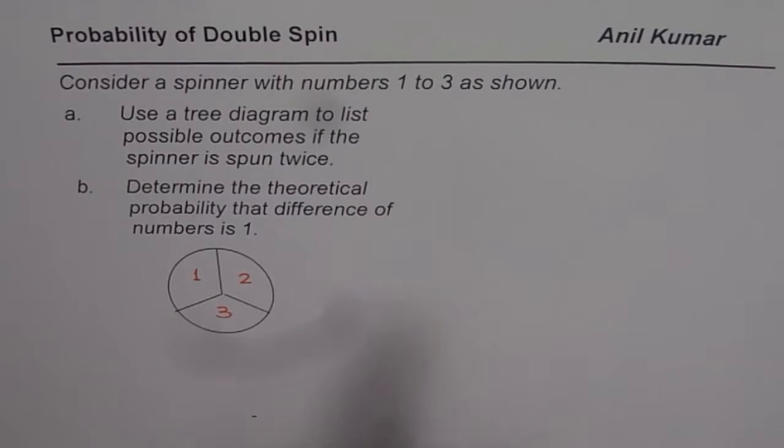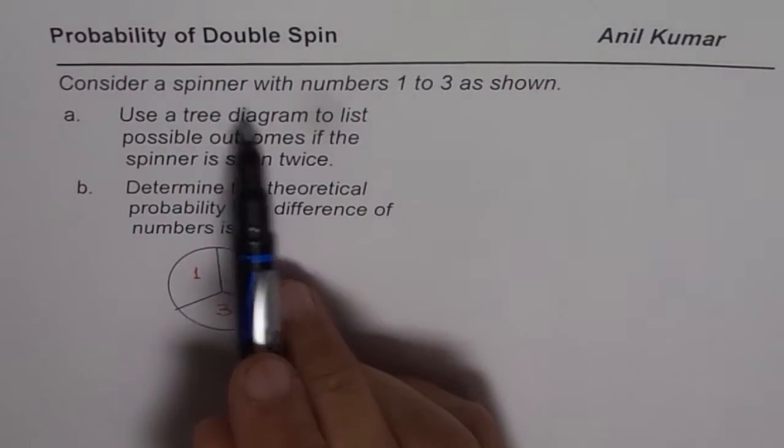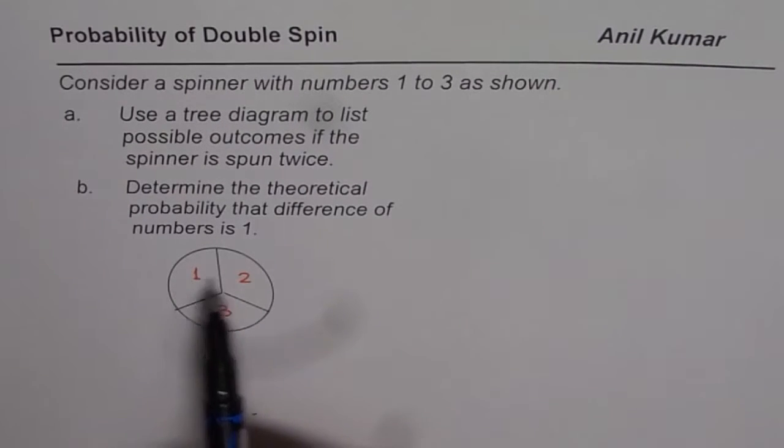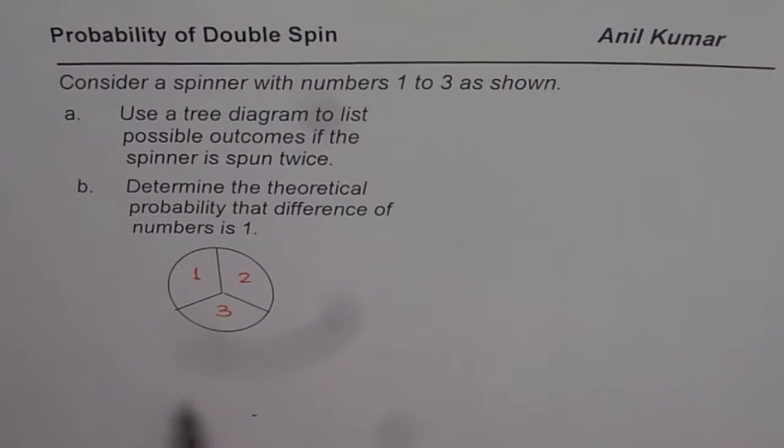The question here is, consider a spinner with numbers 1, 2, 3 as shown. So that is your spinner, 1, 2 and 3 are the numbers. Imagine that they are all equal.